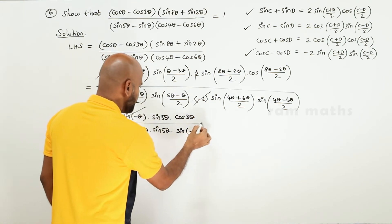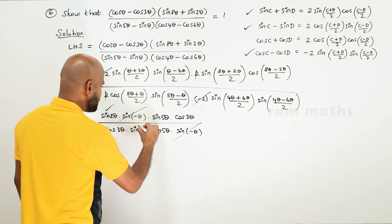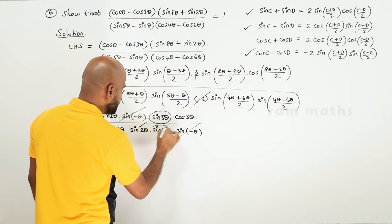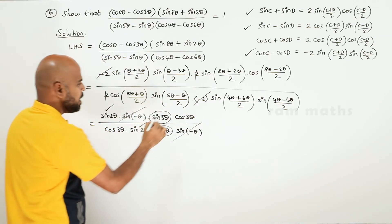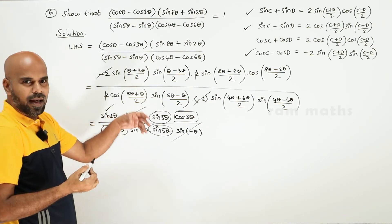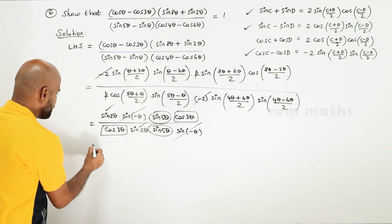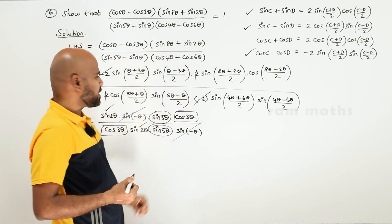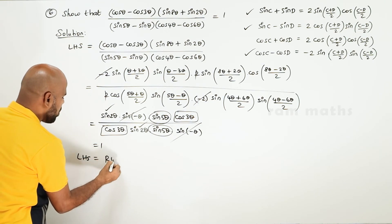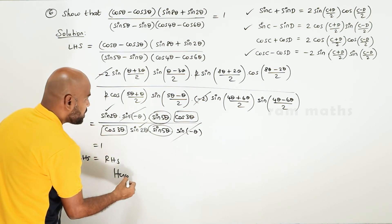Sin of minus theta in numerator and sin of minus theta in denominator cancel. Sin 2 theta cancels. Sin 5 theta cancels. Cos 3 theta cancels. All cancel, leaving 1 by 1, which equals 1. RHS obtained. LHS equals RHS — hence showed.